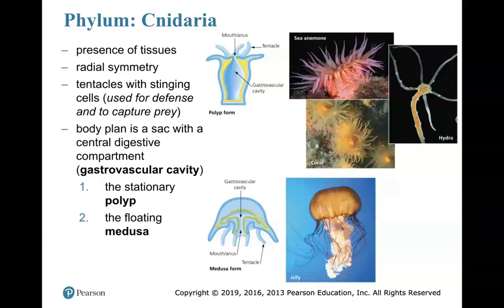So there are different ways to cut up the body of a Cnidarian to demonstrate that radial symmetry. Cnidarians are known for having tentacles with stinging cells, which are used for defense and to help capture prey for food. Their body plan is basically a sac-like structure with a central digestive compartment, termed a gastrovascular cavity.